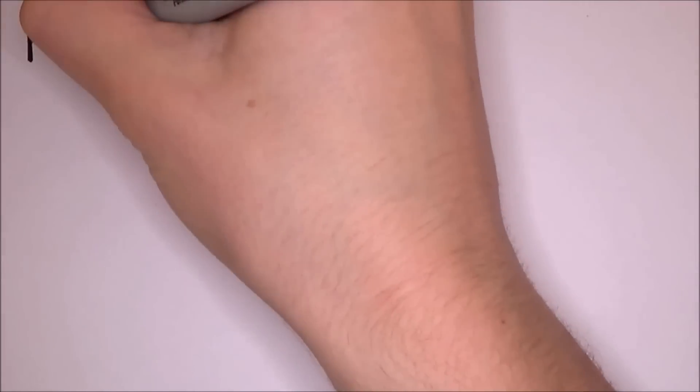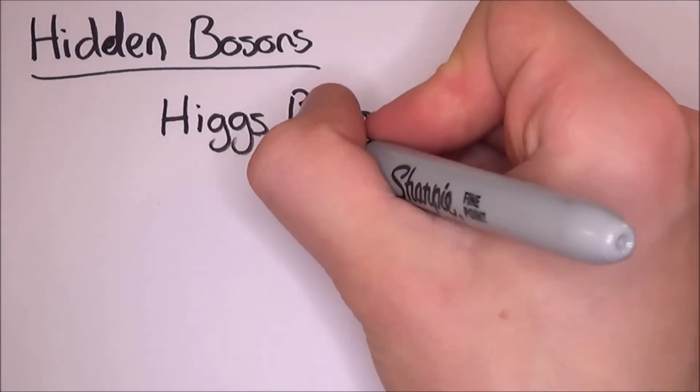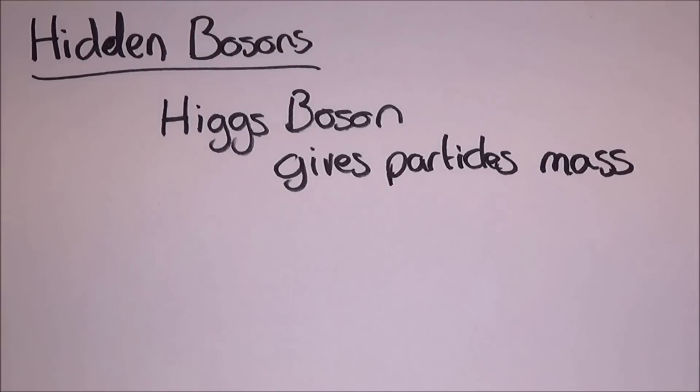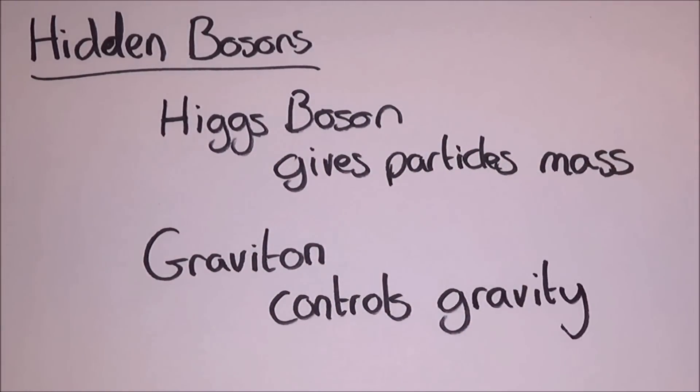There are a few bosons which many physicists think exist but have eluded detection. The Higgs boson, which was thought to have been found but had its doubts cast over it, which is the boson that apparently gives particles matter. There's also the graviton, which is the particle that controls gravity.